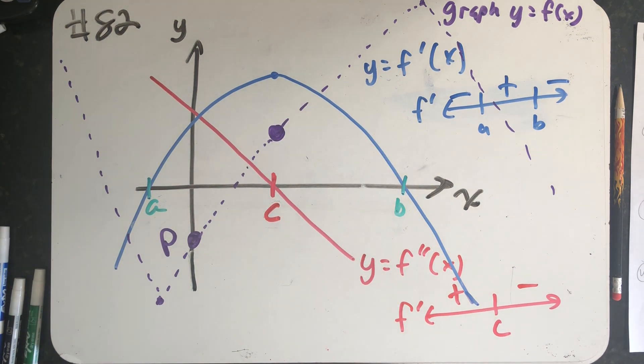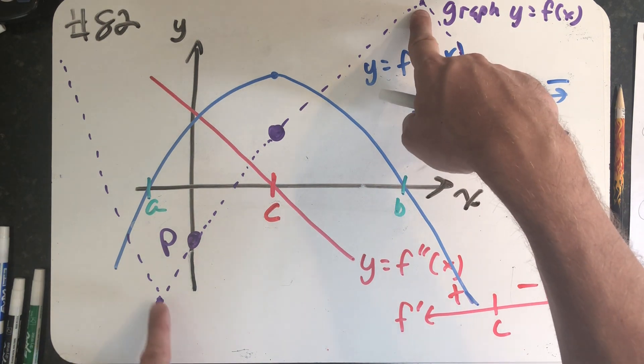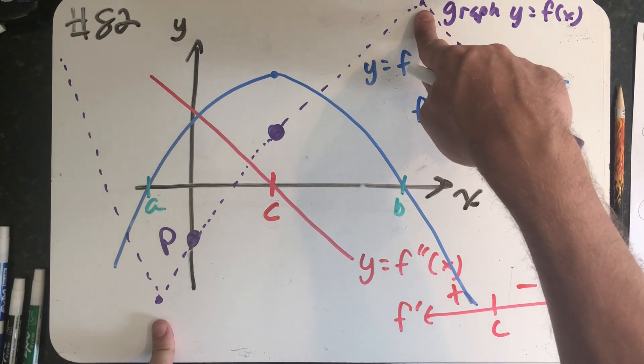There's going to be a point of inflection right there. I'm concave up and then I'm concave down. Let's see if I can draw a function that now satisfies everything. I'm not really concerned about going through this point or this point because I just put those in to help me out.